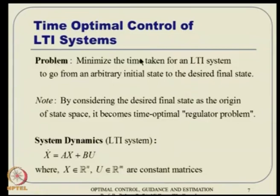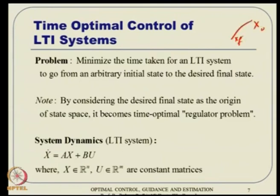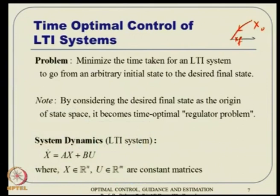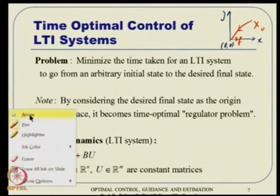The problem is to minimize the time taken for an LTI system to go from an arbitrary initial state to the desired final state. We start at a certain point x_0 in state space and want to go to x_f, and that should happen in minimum time. We place the axis system at the desired final state, so without loss of generality the desired final point is the origin.